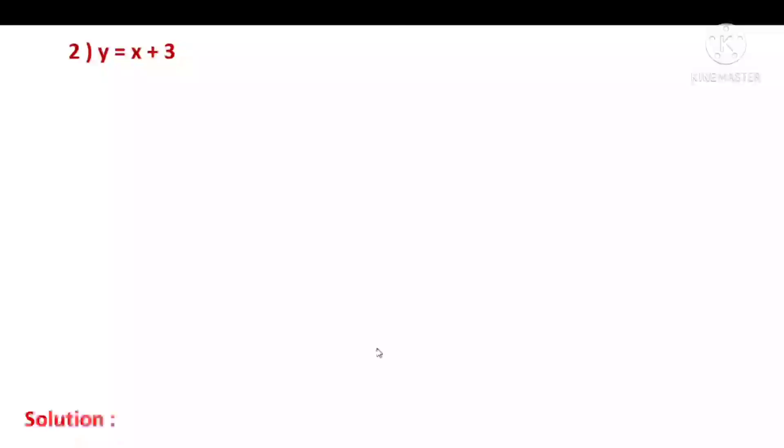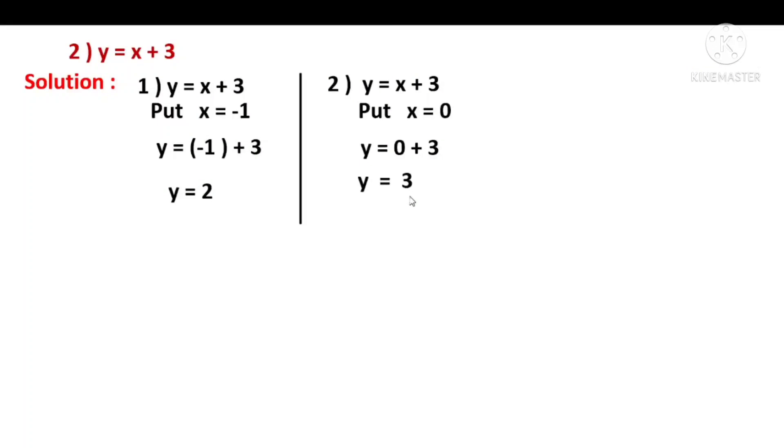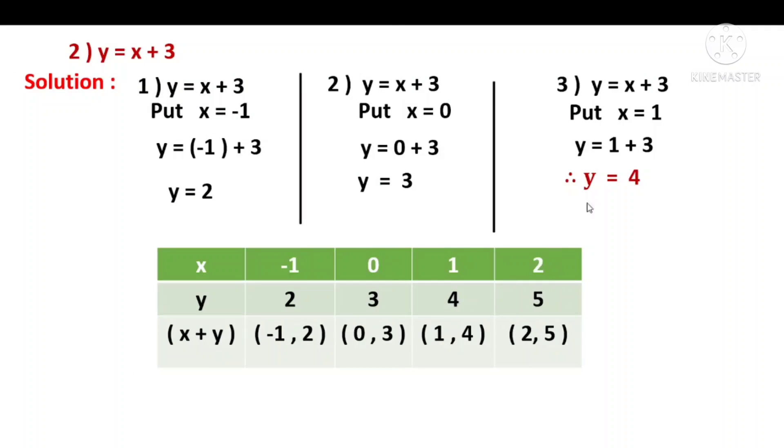Equation 2. Y is equal to x plus 3. Put values. Y is equal to x plus 3. Put minus 1 for x value. Y is equal to minus 1 plus 3, so y is equal to 2. Put x value as 0. Y is equal to 0 plus 3, so y is equal to 3. Put x is equal to 1. Y is equal to 1 plus 3, so y is equal to 4.